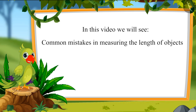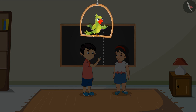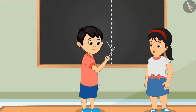Today, Chotu and Pinky's mother has brought a new blackboard for them. They are both making something with chalk on the blackboard, and Pinky said to Chotu: 'Chotu, you can't make anything here, this is my space!'